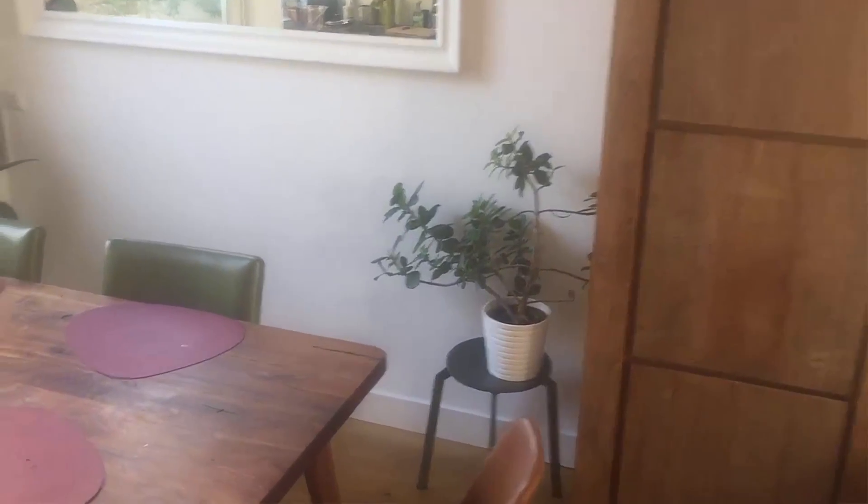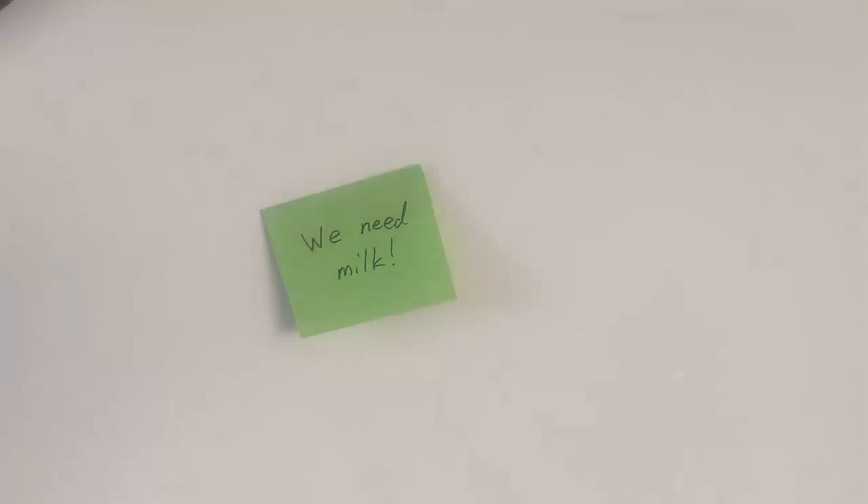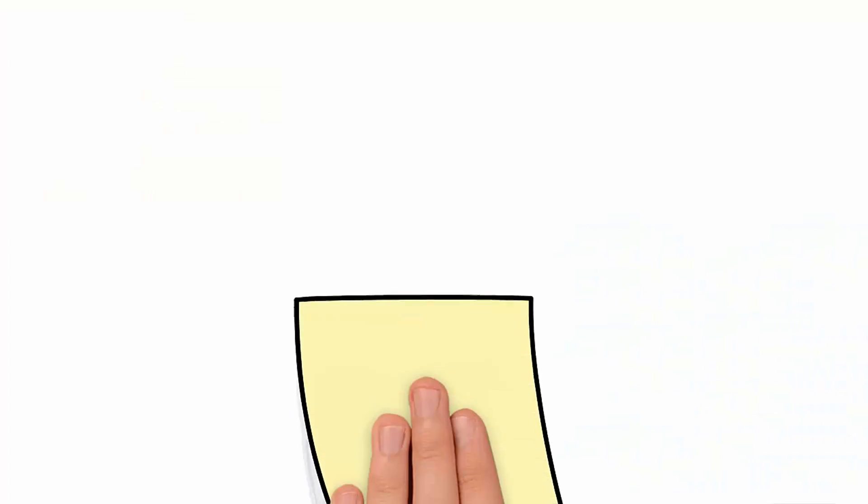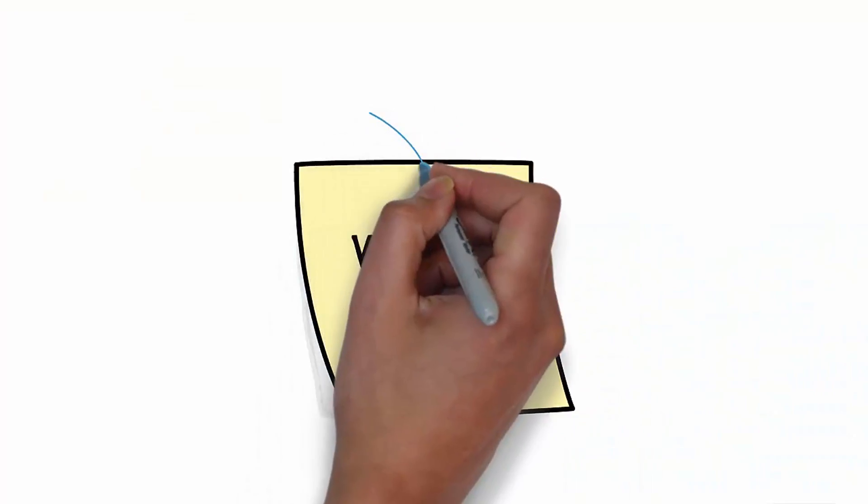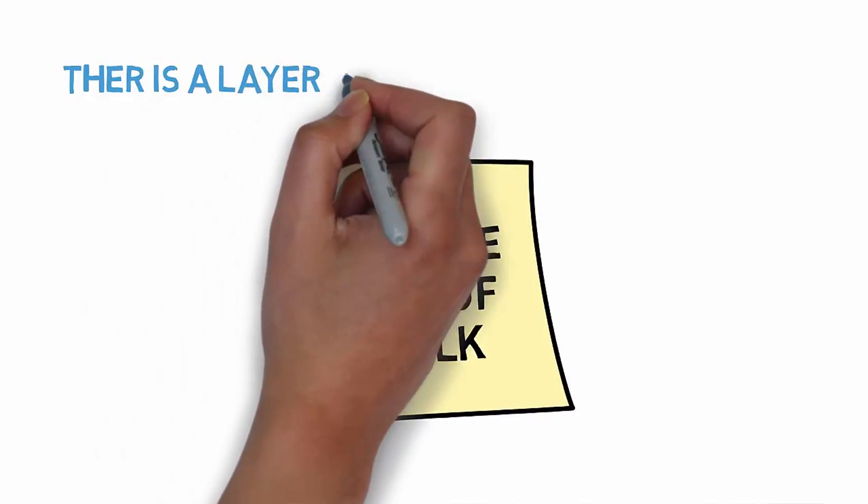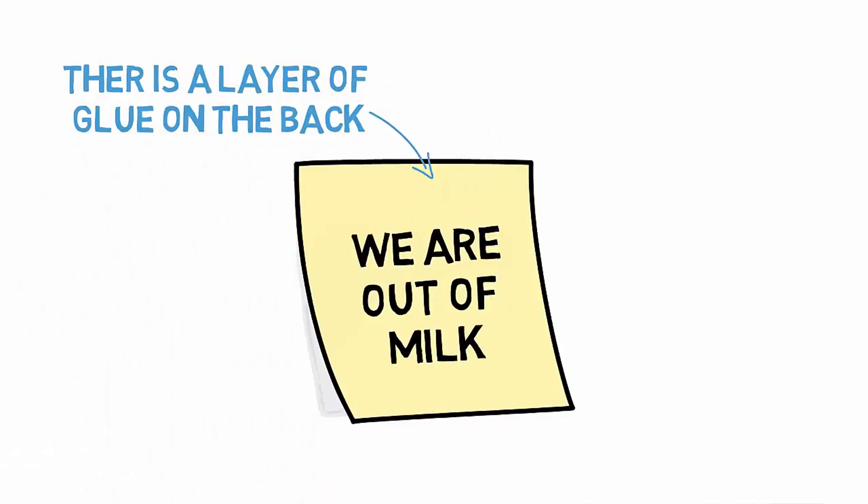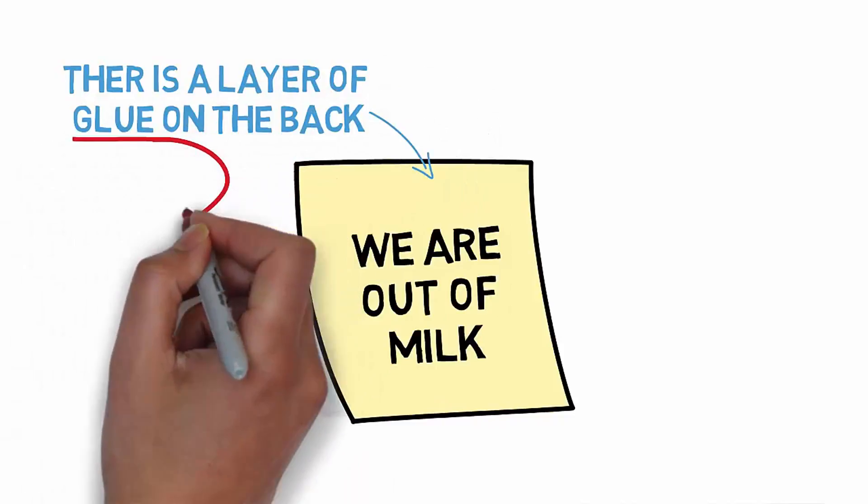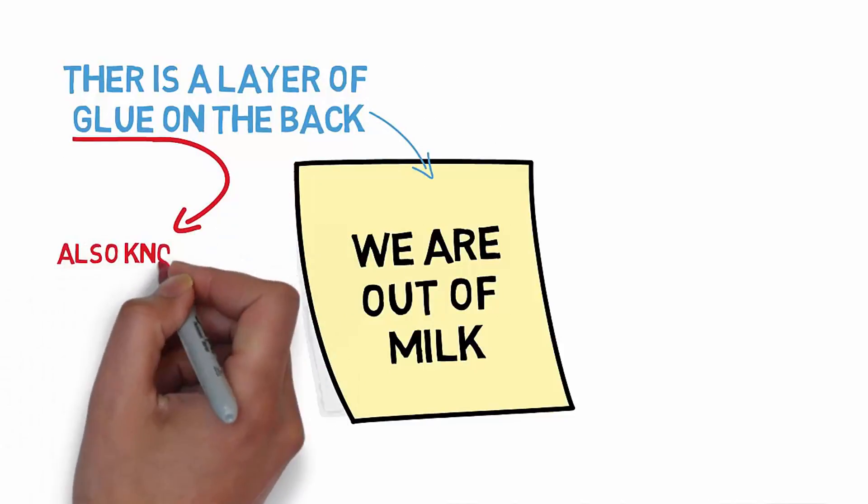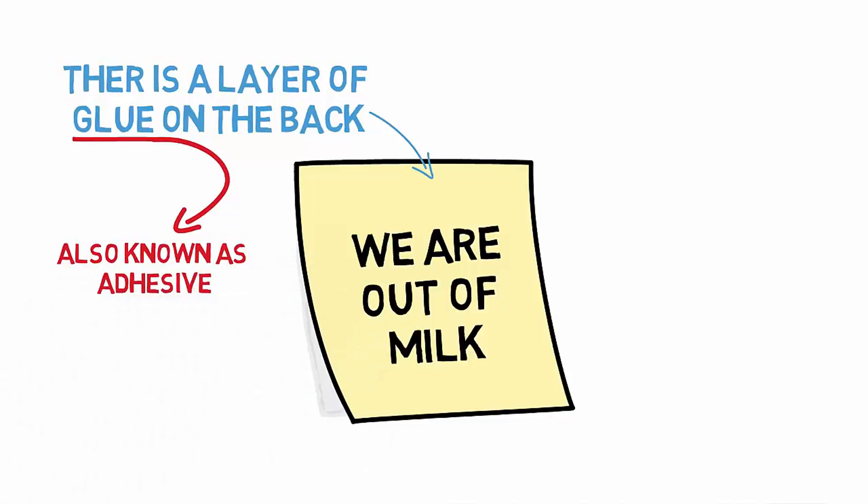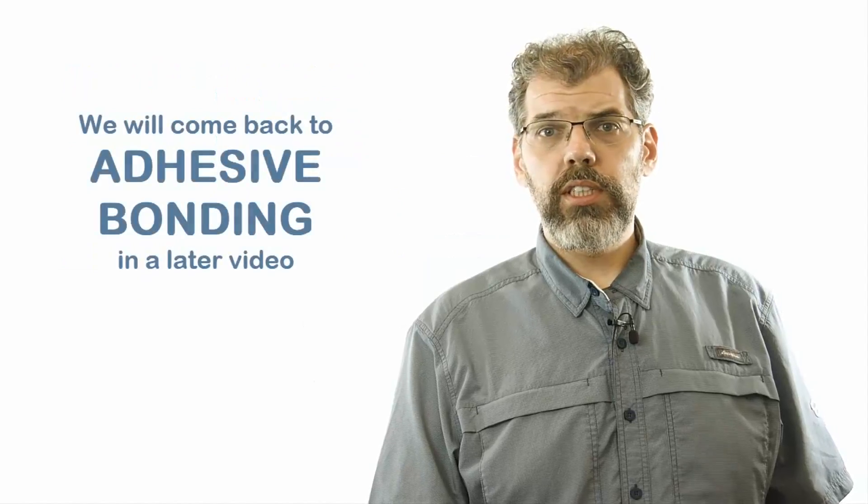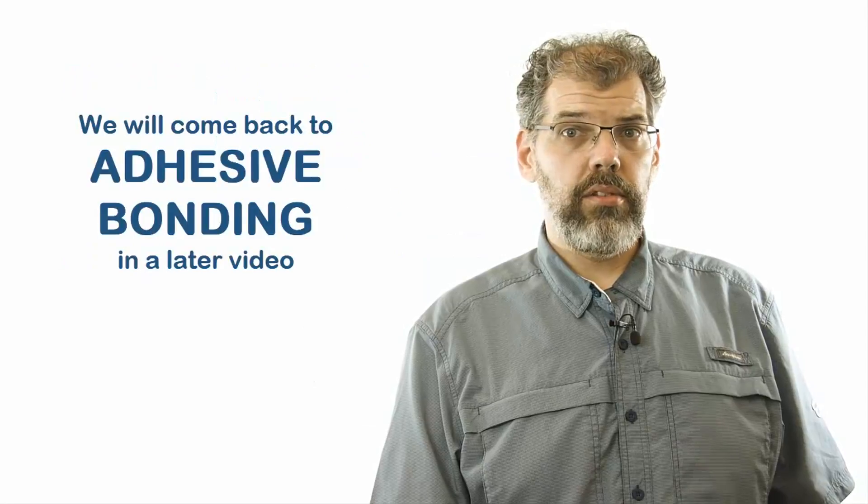When I went to the fridge to get my morning breakfast, I saw that my son had left me a note on the fridge using a sticky note. Such a note relies on a layer of glue to cause the paper to stick to the surface of whatever object you want it to. This joining technique of using glue, also known as an adhesive, to stick two parts together is called adhesive bonding. We will revisit the topic of adhesive bonding in a later video.